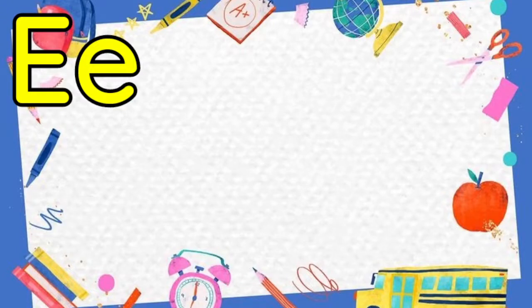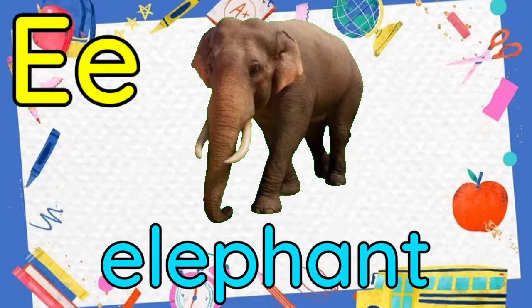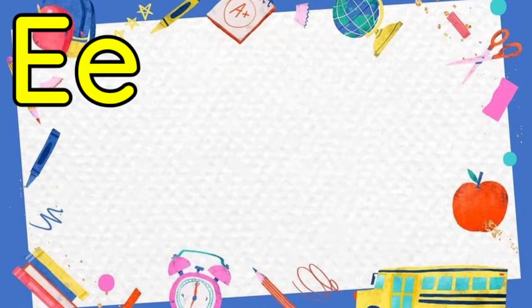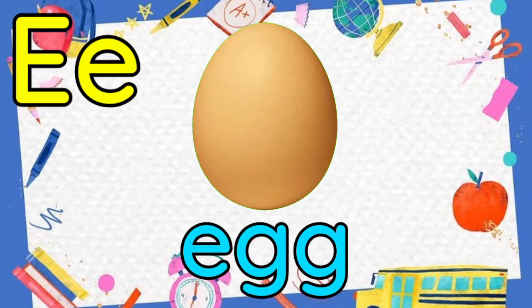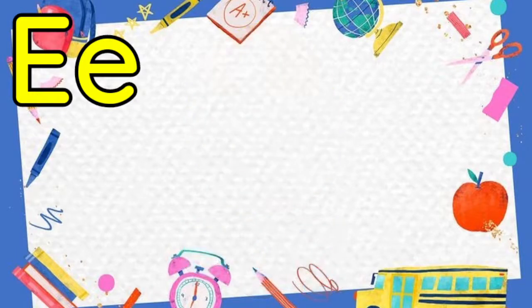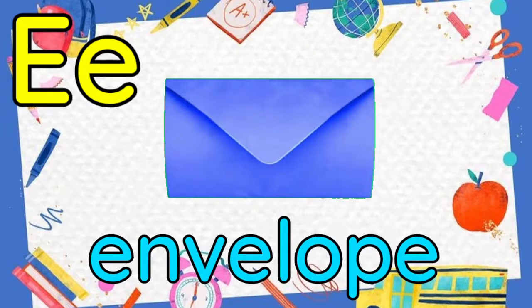E is for elephant. One more time — E, elephant. E is for egg. One more time — E, egg. And E is for envelope. One more time — E, envelope.